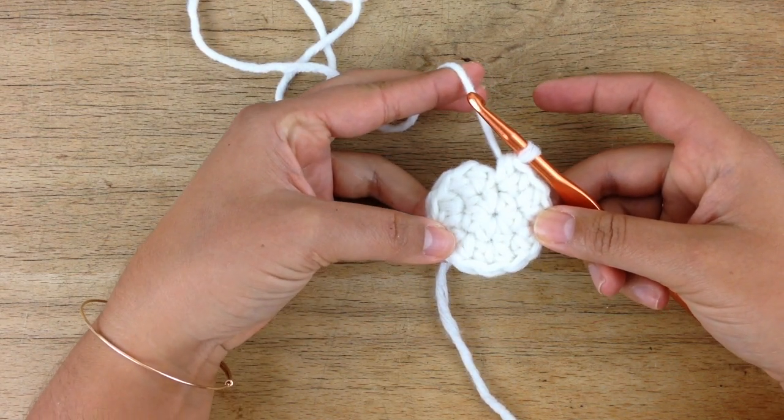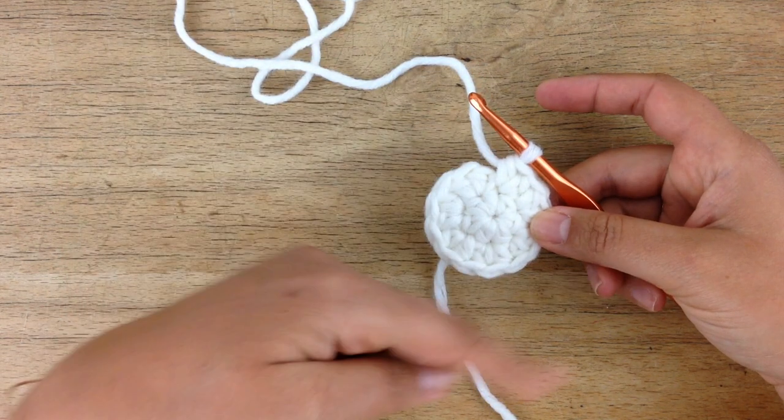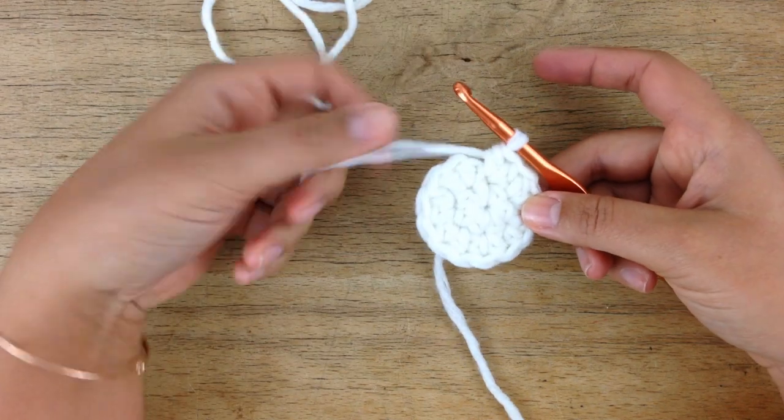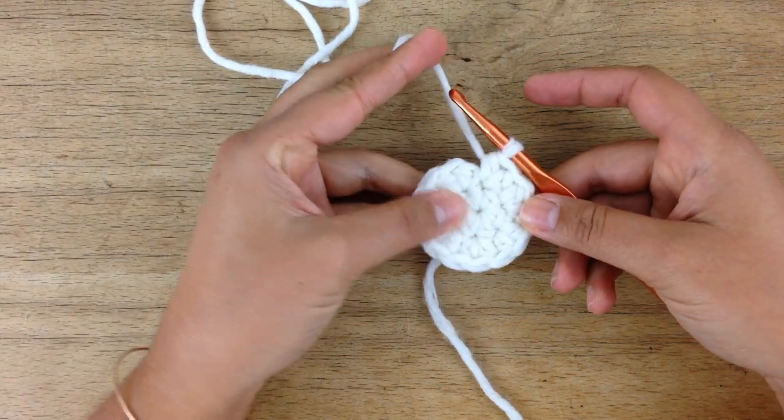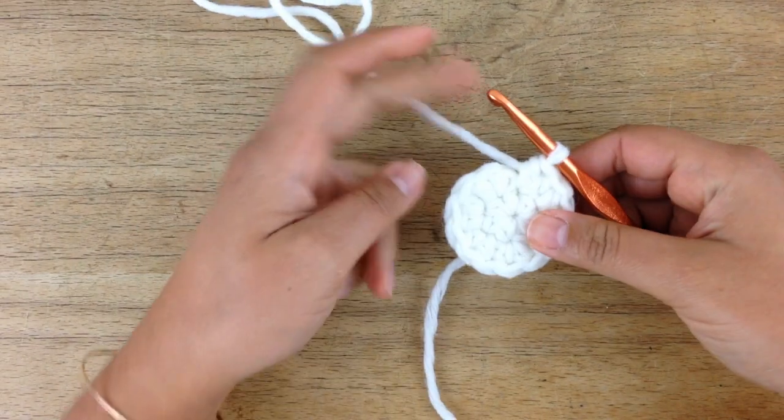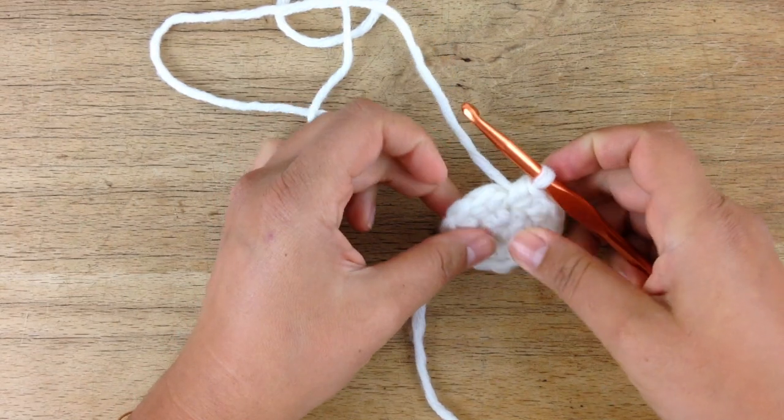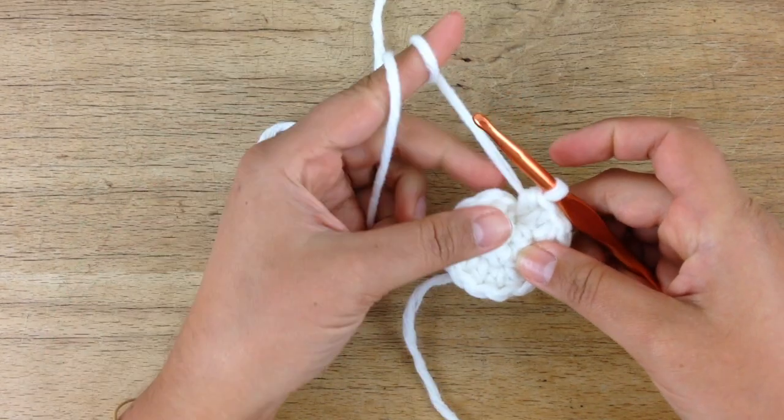So for our basket, we will work the bottom in joined rounds. We will gain the height of the basket in unjoined rounds, so you need to know about all techniques.